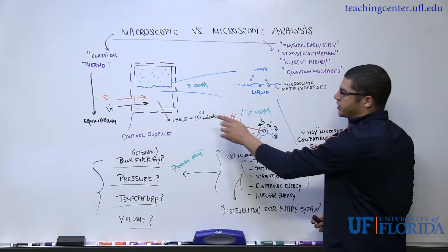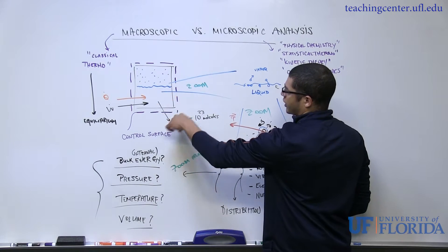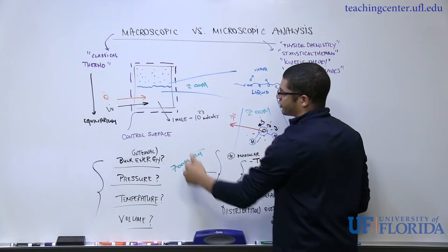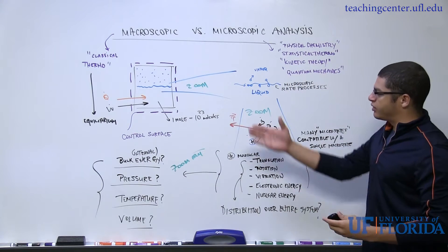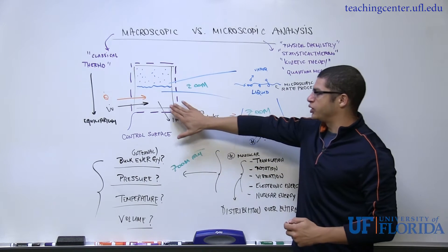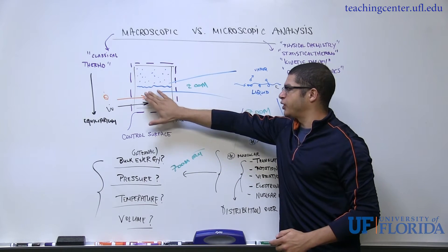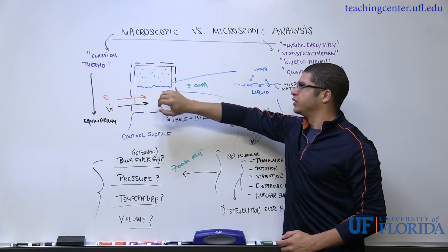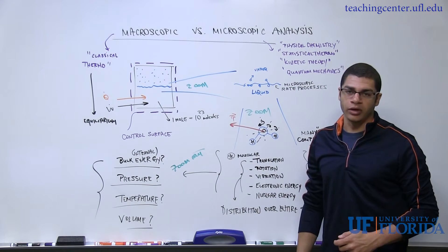Typically in this course we'll be given a system similar to what I've drawn in this schematic. It could be a tank of water. In this particular example I've drawn some liquid water with an interface and then water vapor coexisting with the liquid above.